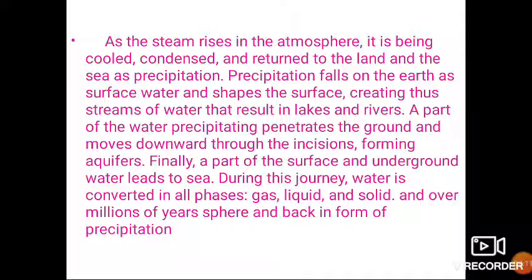Precipitation is also responsible for forming water bodies like lakes and rivers. Some part of this precipitation gets infiltrated into the ground, forming ground water. Finally, surface and underground water flows back to the sea. During this journey, water is converted into all phases — gas, liquid, and solid — and over millions of years this cycle has taken place on earth. This cyclic journey through atmosphere, lithosphere, and hydrosphere is called the hydrological cycle.